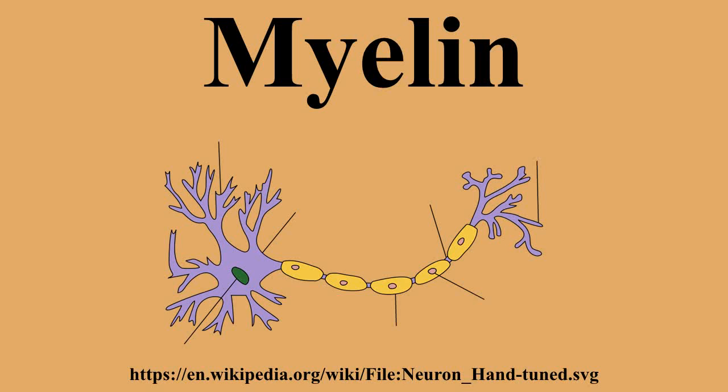Myelin decreases capacitance and increases electrical resistance across the cell membrane. Thus myelination helps prevent the electric current from leaving the axon. It has been suggested that myelin permits larger body size by maintaining agile communication between distant body parts. Myelinated fibers lack voltage-gated ion channels along the myelinated internodes, exposing them only at the nodes of Ranvier, where they are found far more abundantly.